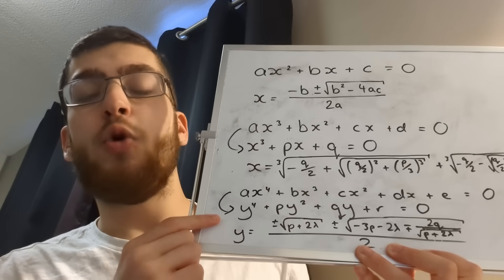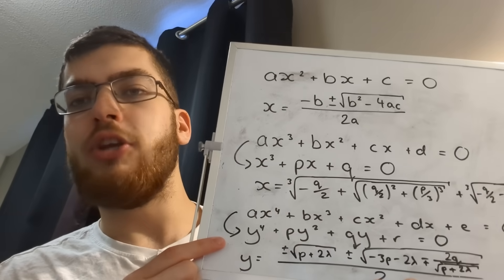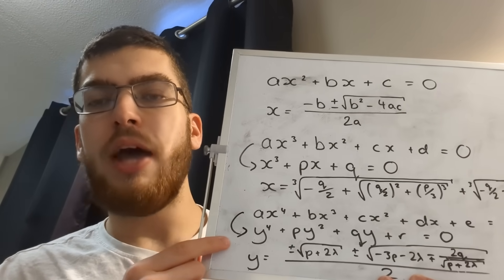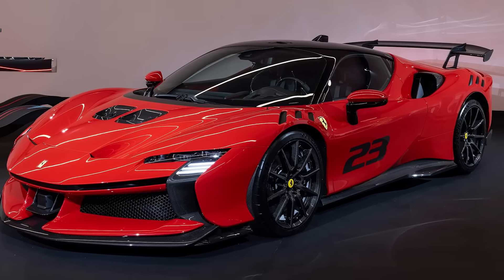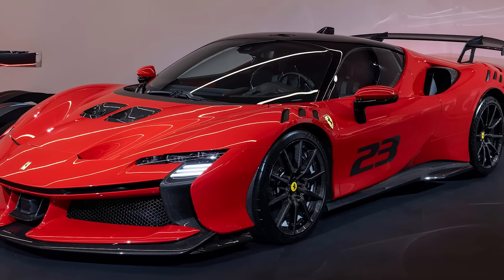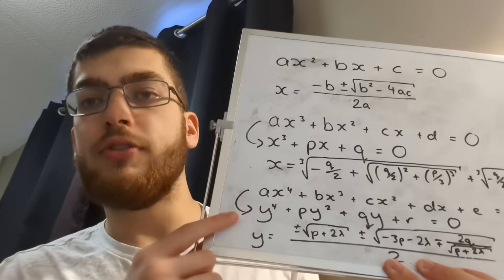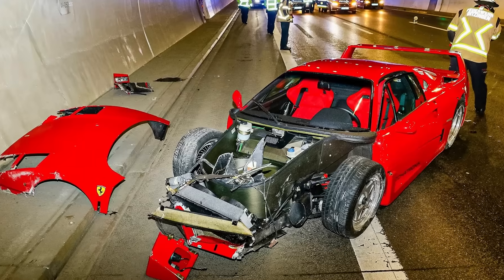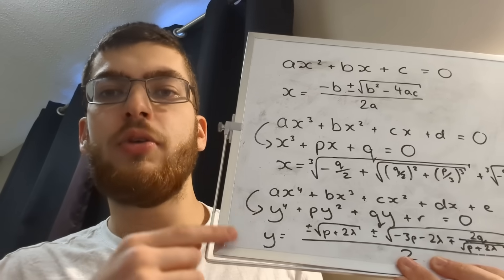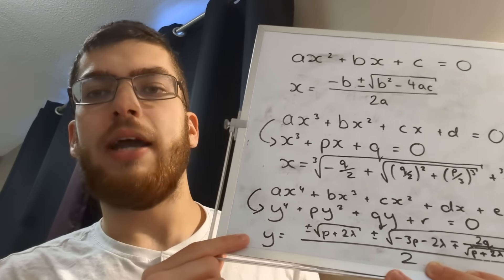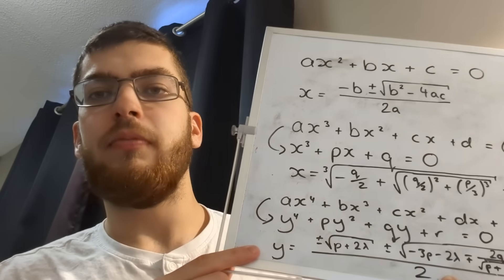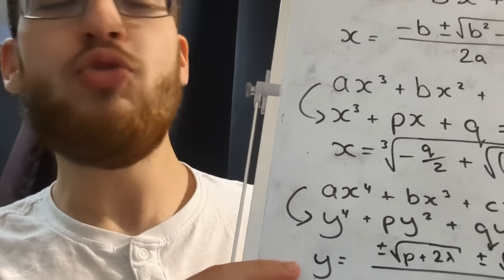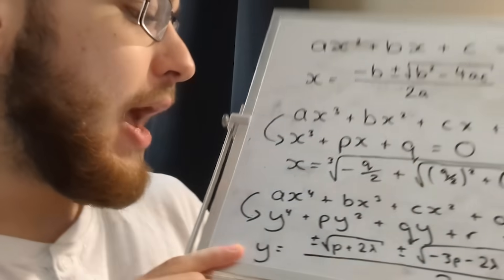And then similarly with a quintic equation, you reduce it down to this one here. And then you use Ferrari's method, which unfortunately doesn't actually involve any real Ferraris. And then you can use this equation here to find y on its own. I've used y — why did I use y? Why not?